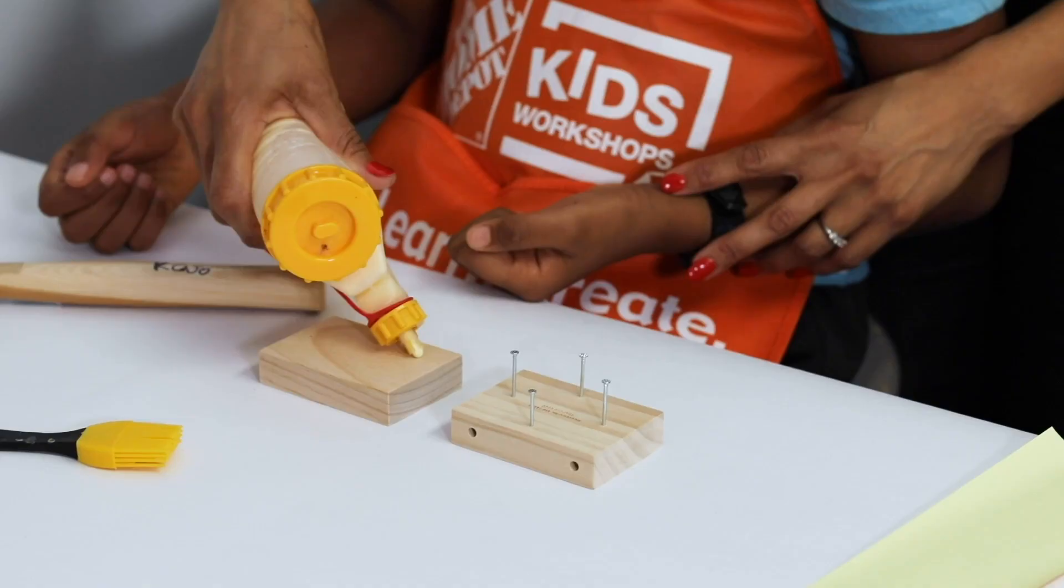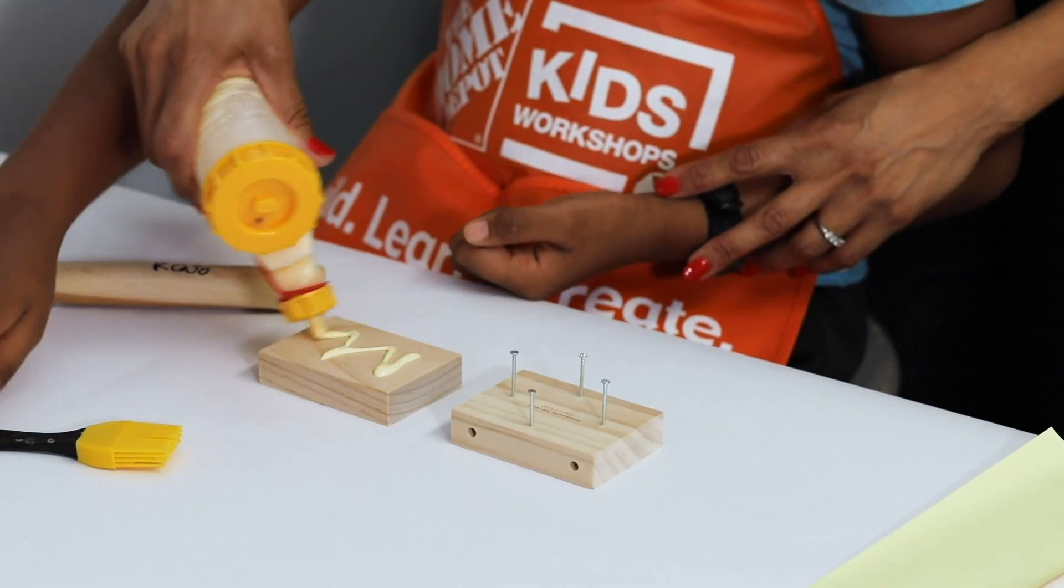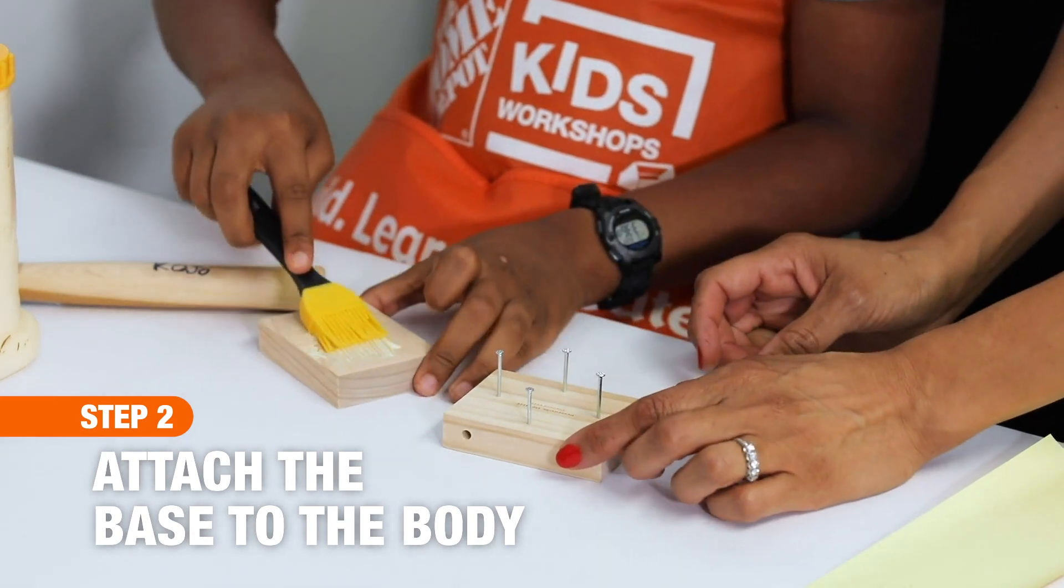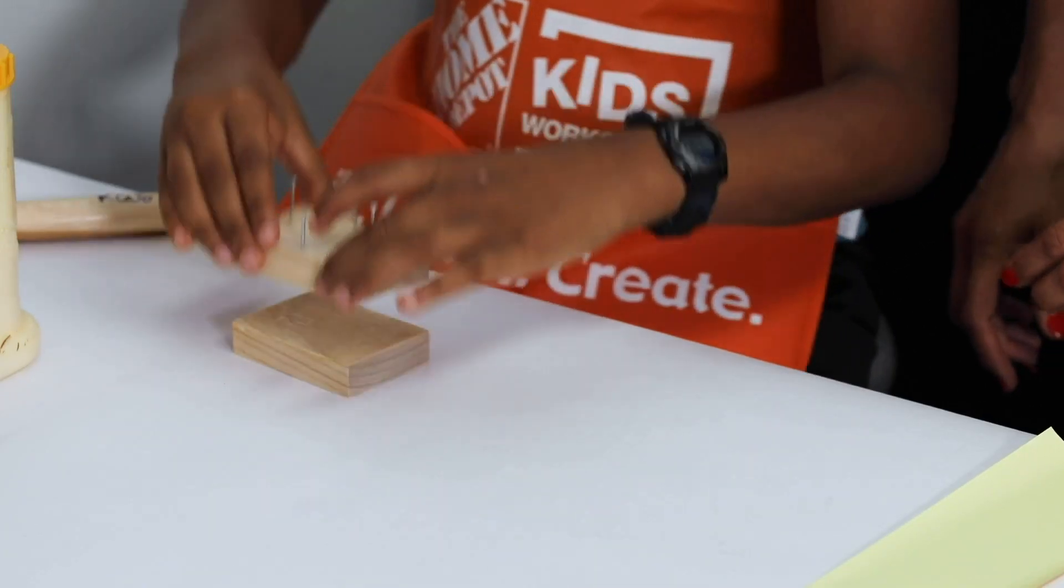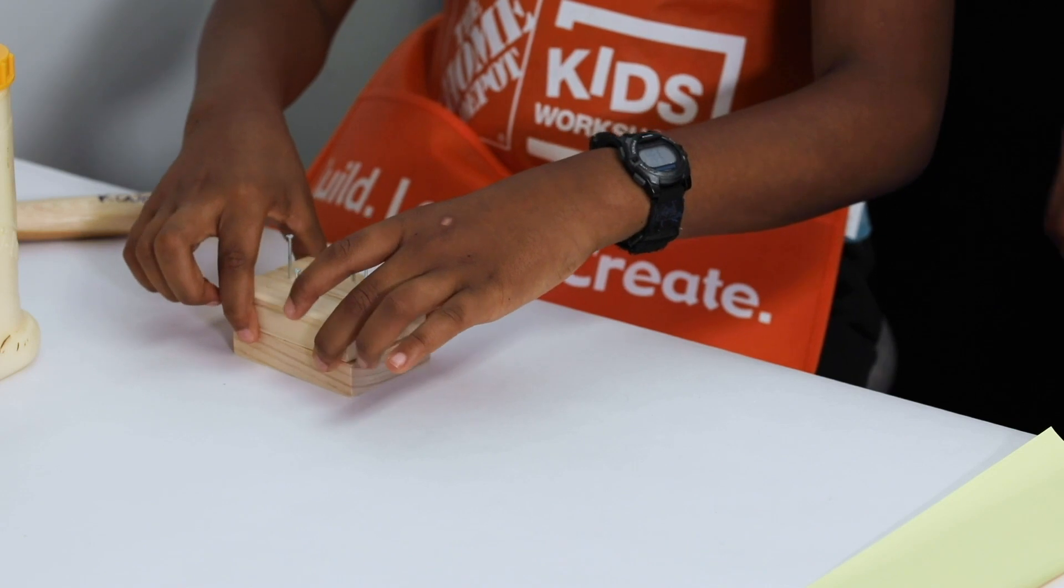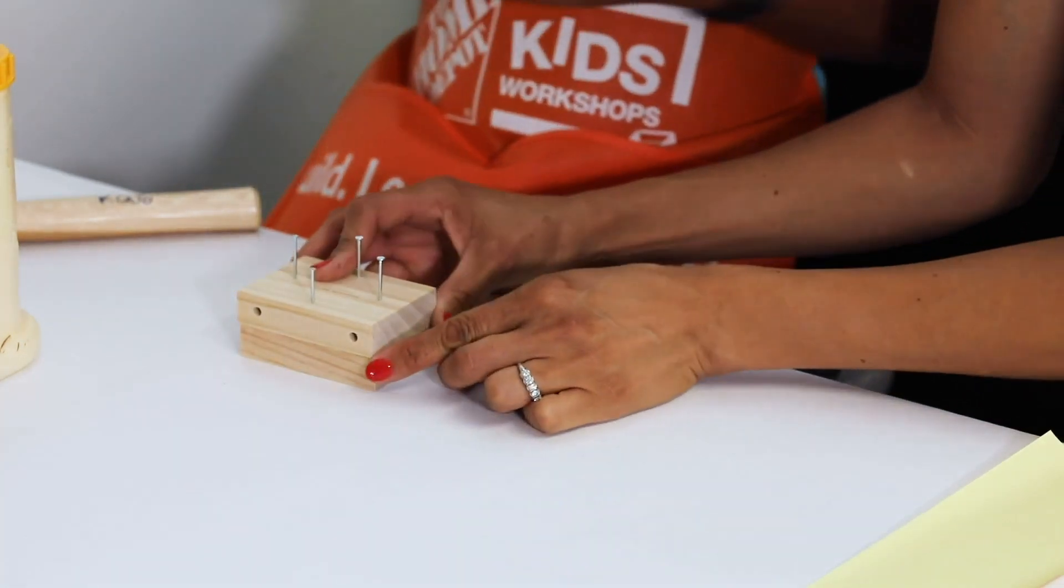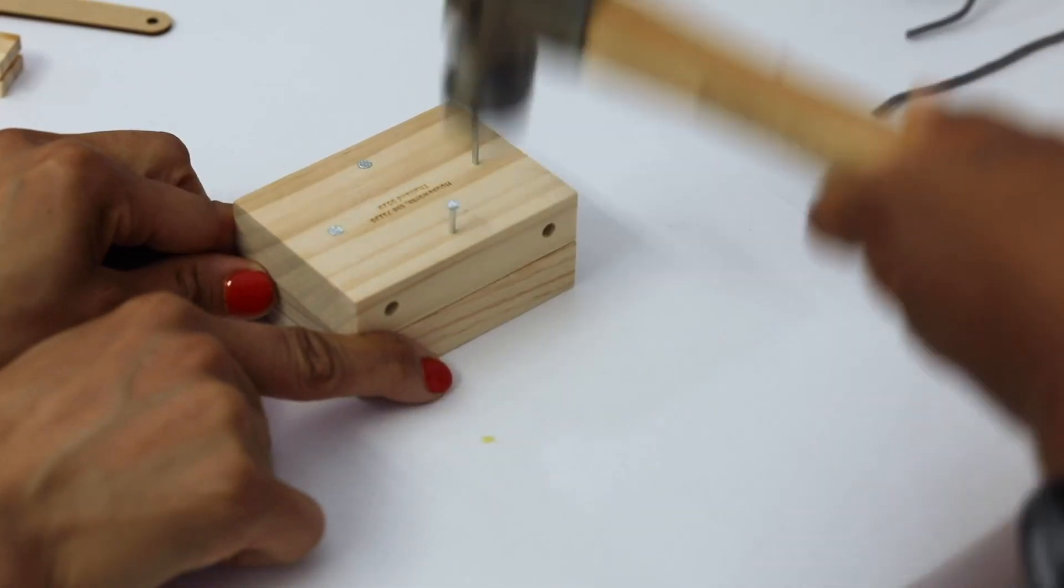And then for step two, take the body, lay it down, put a little bit of wood glue, smear that around but don't get too messy, and then set the base on top of the body, making sure that those edges are lined up. With the wood glue, it's going to be a little wiggly, so hold it in place and then let it dry for a couple minutes and then hammer it down.